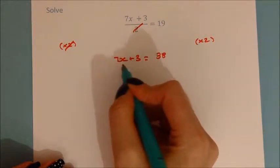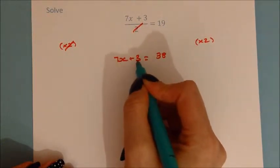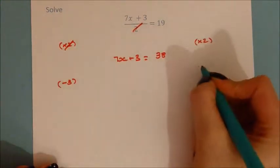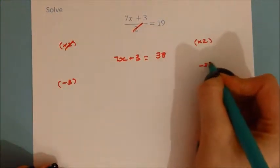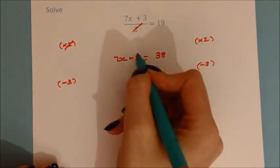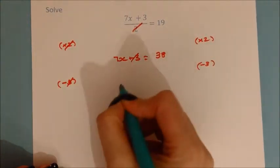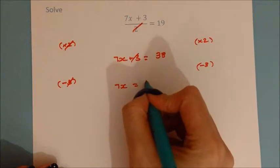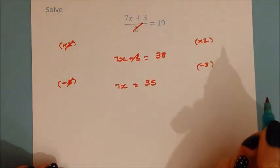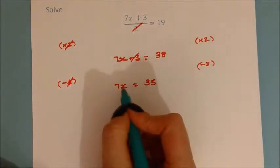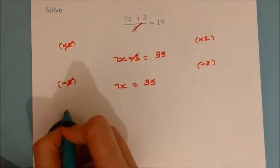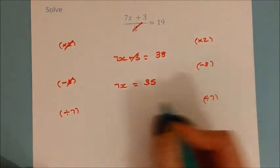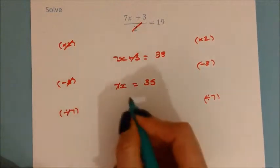We now have a two-step equation: multiply x by 7, then add 3. The last thing was add 3, so we subtract 3 from both sides. That cancels out, giving 7x equals 38 minus 3, which is 35. The last step is to divide by 7 to get rid of the multiply by 7, so that cancels out, giving x equals 5.